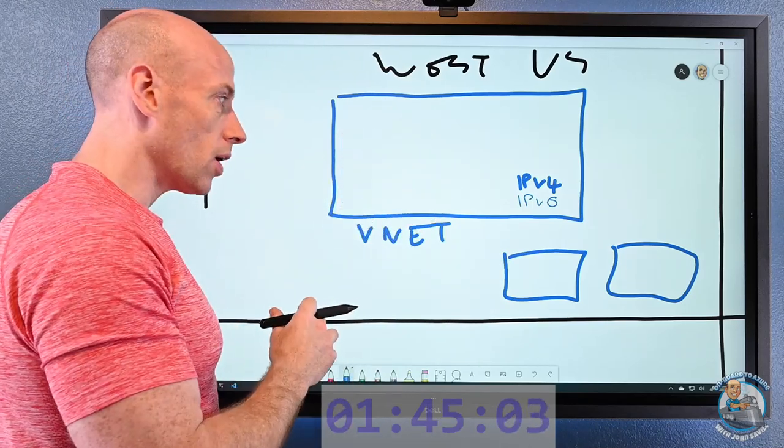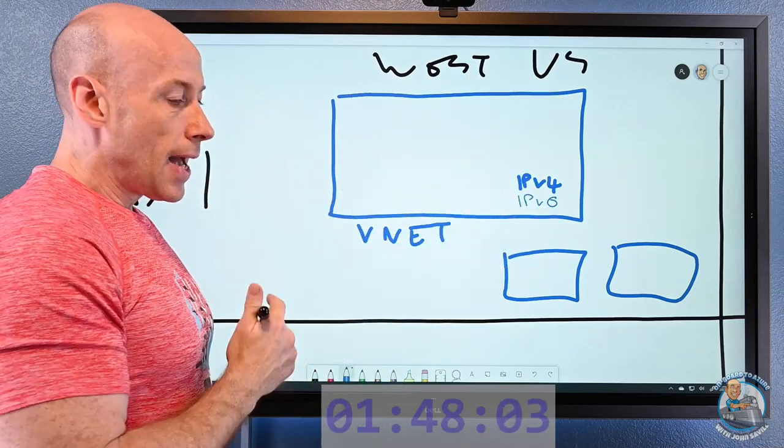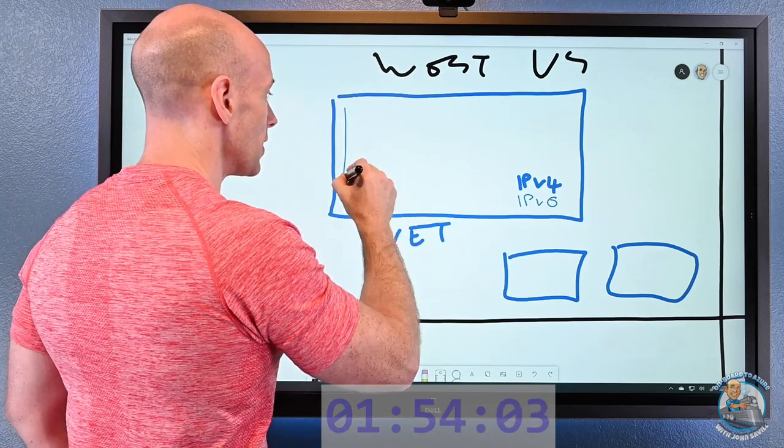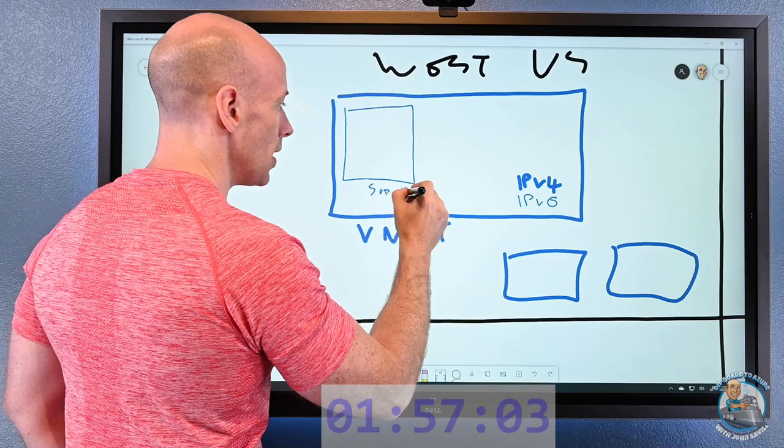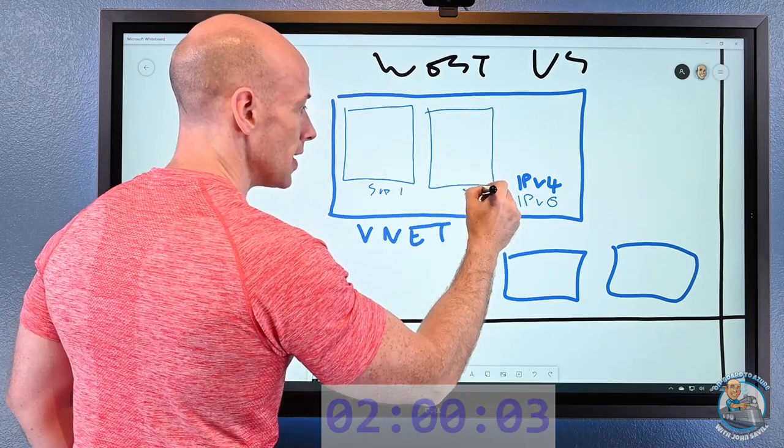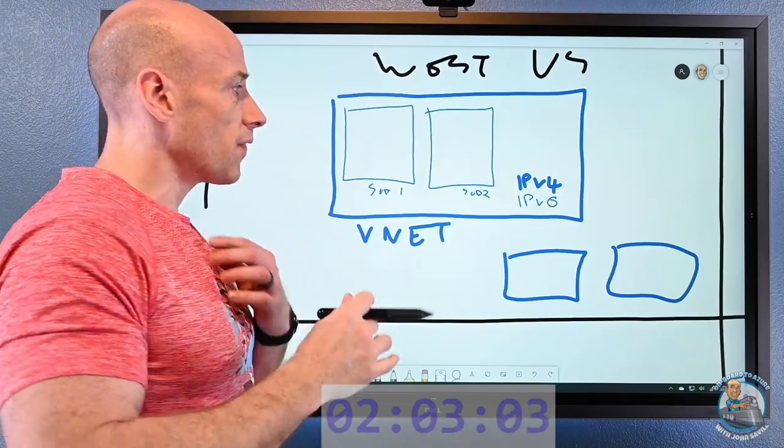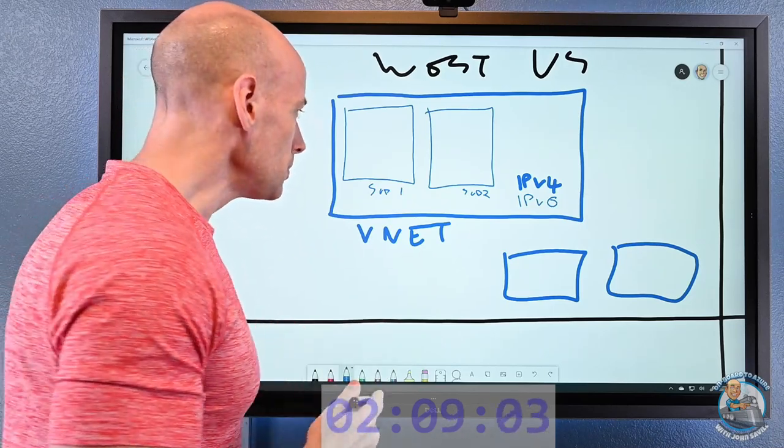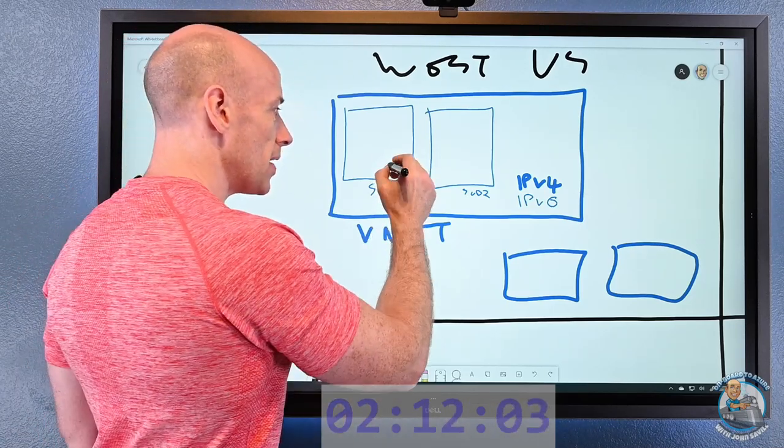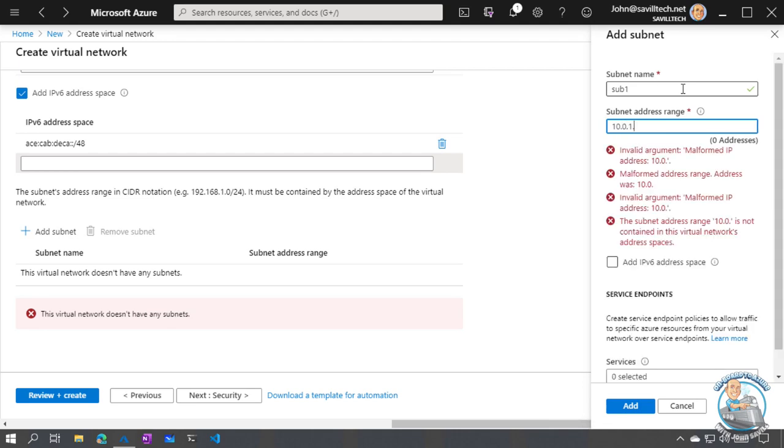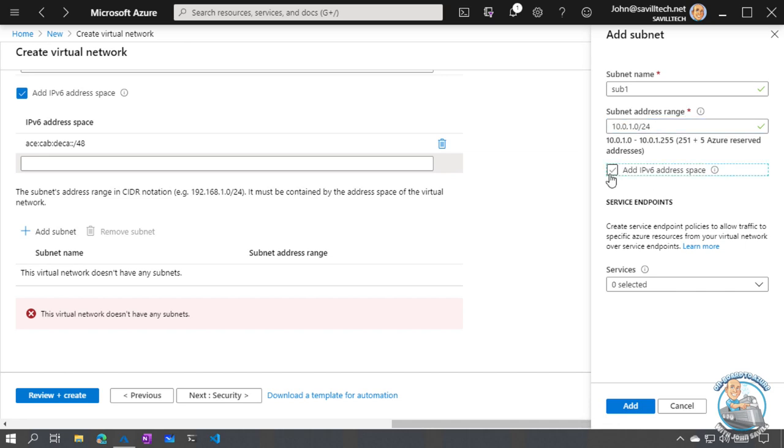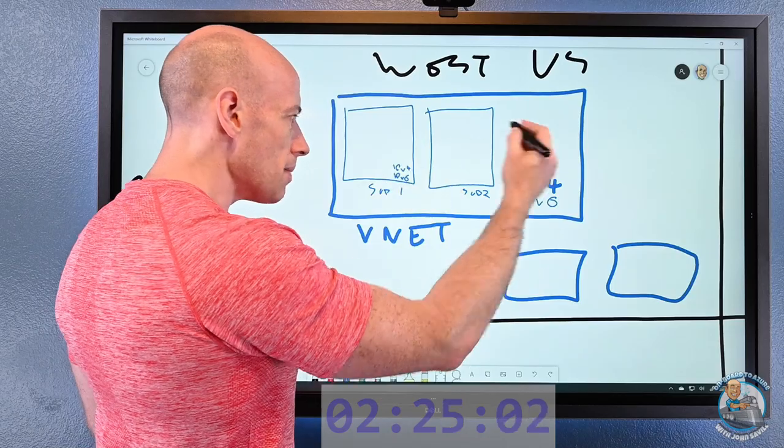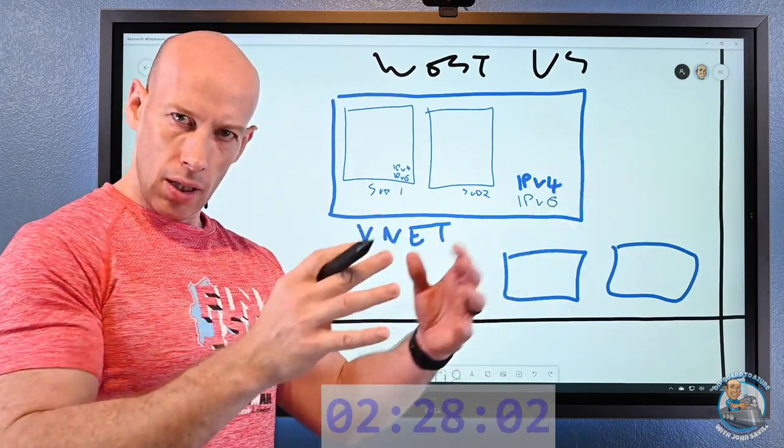And then once I have that virtual network within a region, within a subscription, I can then go and divide it into subnets the same way we would on-premises. So I can divide this up into subnet 1, subnet 2, etc. And once again a subnet is defined using that kind of CIDR format. Network name slash number of bits that make up the network. And once again they can have both an IPv4 and an IPv6.